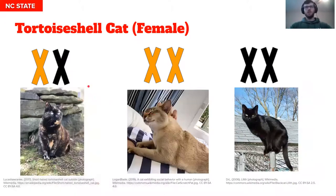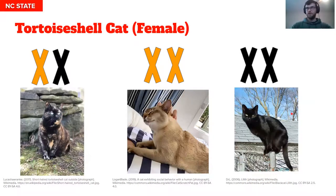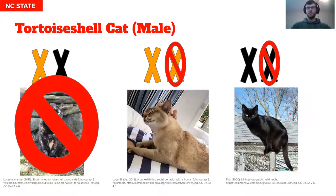So tortoiseshell cats have two X chromosomes — one from the male parent, one from the female parent. So if you have both, you're going to get a tortoiseshell cat. If you have two orange alleles, you get orange; two black, you get black. Males, no tortoiseshell — it's not happening. You can only be orange or black because you can only get one allele from the mother and you're going to get a Y from the father.